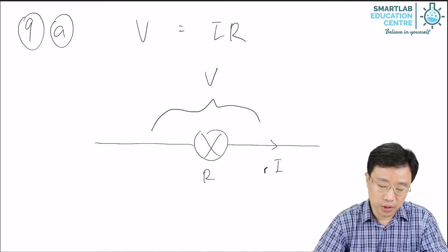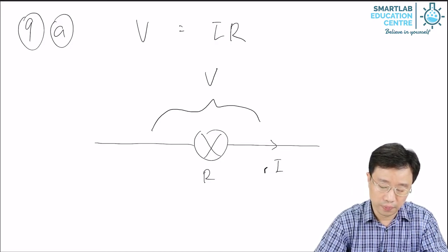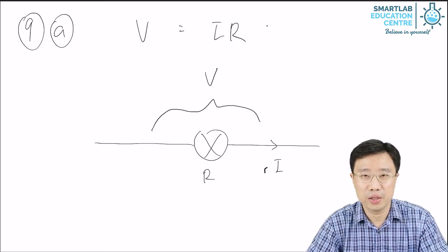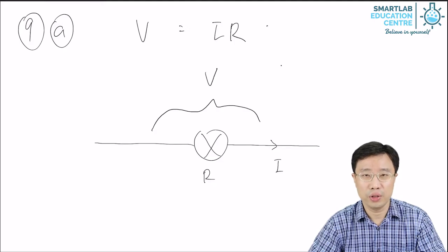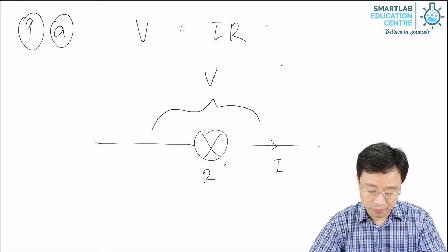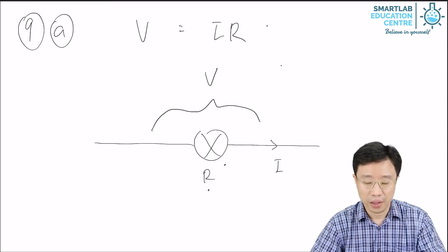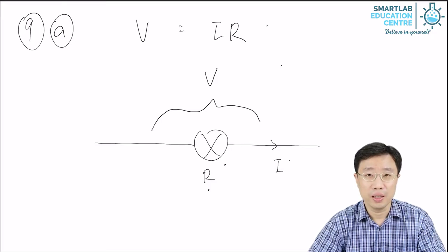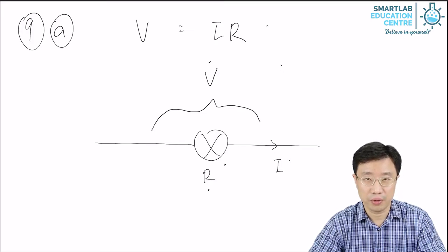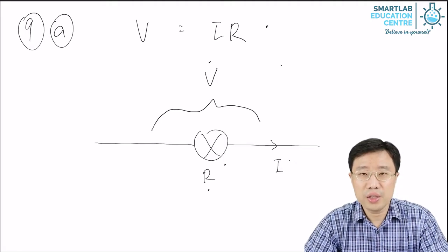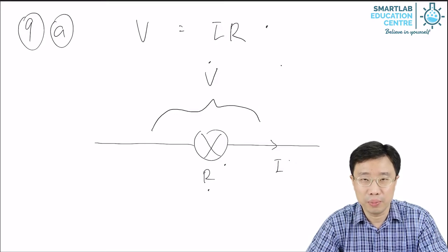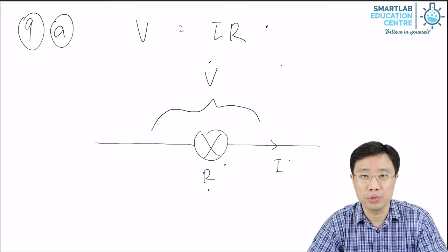The formula we use is V is equal to IR. Now, how do you apply this formula? If you have a circuit component, for example a light bulb, and the light bulb has resistance R, and the current flowing through it is I, and the voltage across the light bulb is V, then these three quantities are related by the formula V = IR. This formula can be applied to a single circuit component, or it can be applied to the entire circuit.